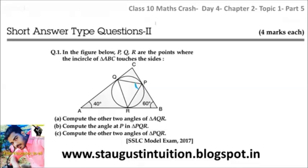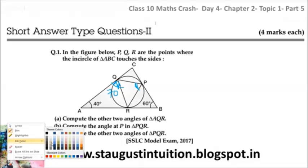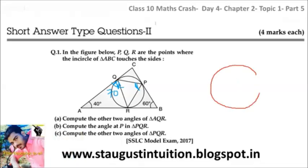What is this angle? Angle AQR — we can work it out. According to the tangent theory, the angle at Q is the same. So angle at P in triangle PQR relates to the tangent and chord. The angle at P is equal to 70 degrees.